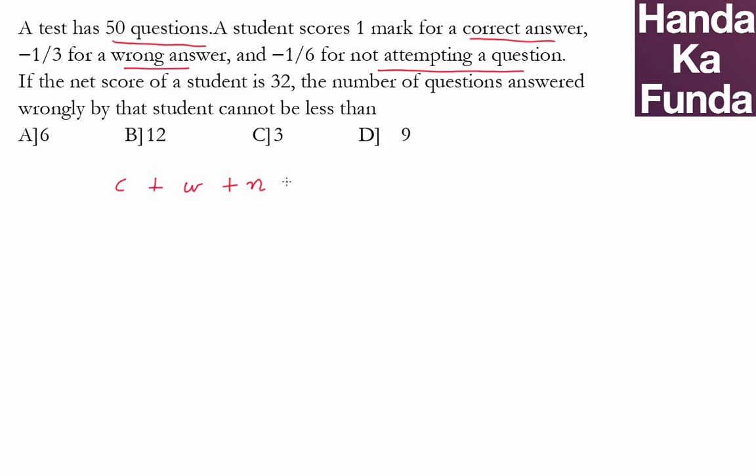There are 50 questions, so the number of questions answered correct (c) plus wrong (w) plus not attempted (n) equals 50. As far as your score is concerned, you get 1 mark for correct (c), minus 1/3 for a wrong answer (-w/3), and minus 1/6 for not attempting (-n/6).